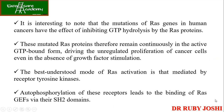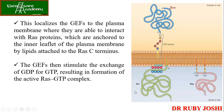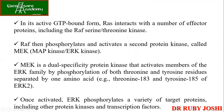Autophosphorylation of these receptors leads to binding of RAS via SH2 domains — SRC Homology 2 domains. These are localized at the inner leaflet of the plasma membrane, anchored with the help of lipids at the C-terminus of RAS. GEF then stimulates the exchange of GDP for GTP, resulting in formation of the RAS-GTP complex.